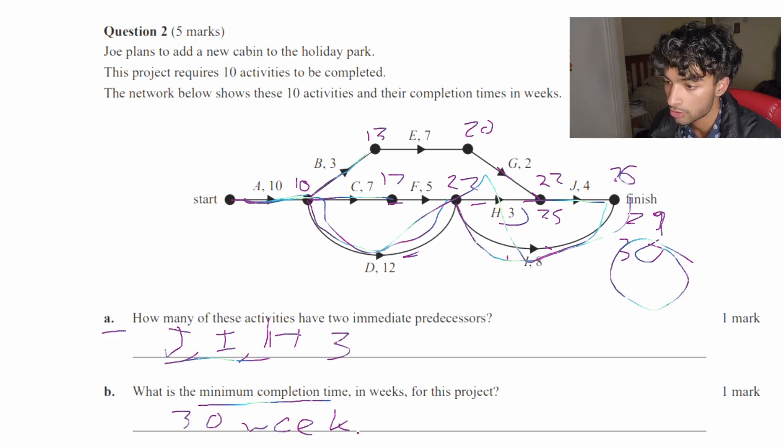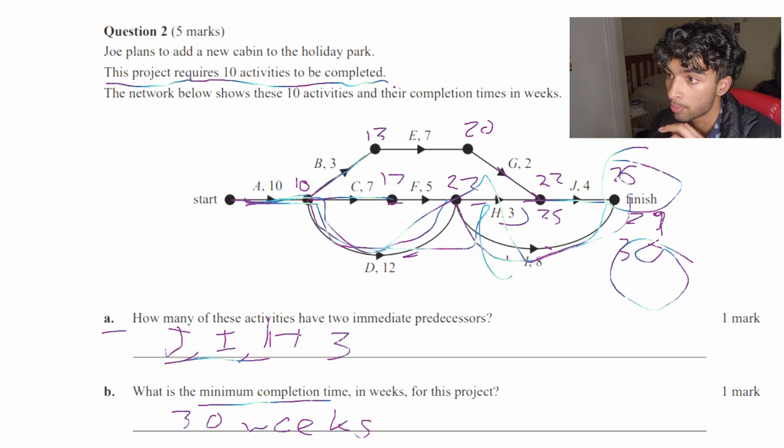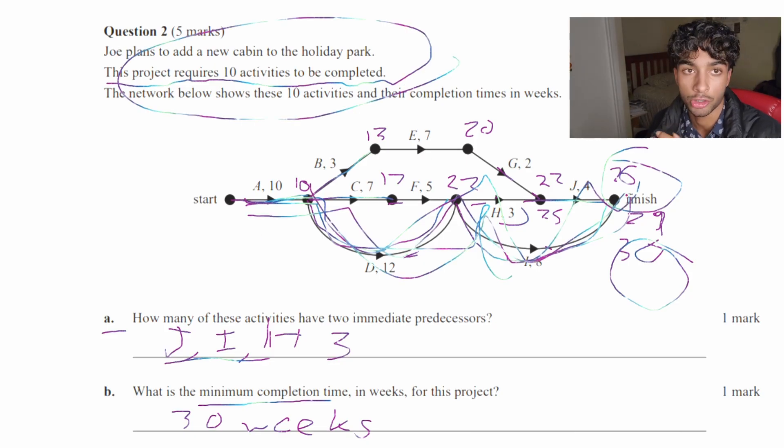So the minimum completion time is indeed 30 weeks. So that's not a mistake that people tend to get tripped up on is when they say minimum completion time, oh, that means it's 26. But no, you have to count for all the activities to be completed. Because as you can see in the question, it says this project requires 10 activities to be completed, which means all of it has to be completed. And the longest path is the minimum completion time.